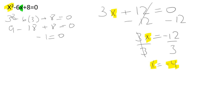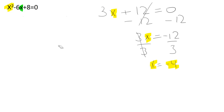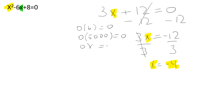Obviously we could do trial and error until we're blue in the face and eventually come up with the answer. But let's think of one of the very basic principles of math: if we take any number and multiply it by 0 we always get 0. Zero times 6 is 0, zero times 5,000 is 0. So we can conclude that 0 times x, no matter what x is, is always 0.